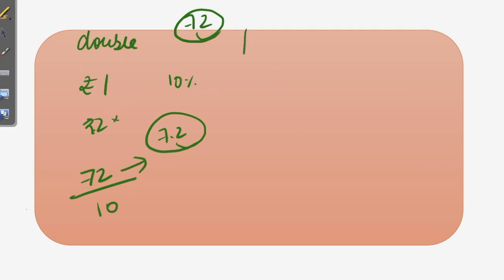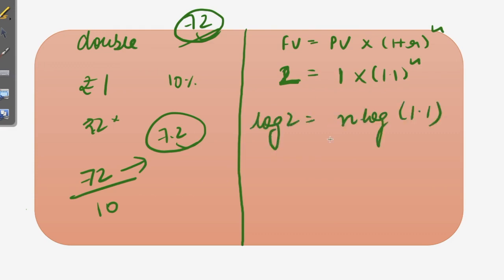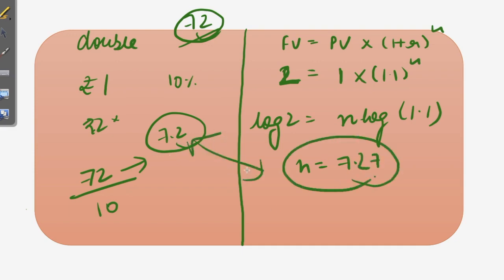To prove that Rule of 72 gives a genuine estimate, we use the formula: Future Value = Present Value × (1 + r)^n. With future value = 2, present value = 1, and r = 10%, so 2 = (1.1)^n. Solving using a log table gives n = 7.27, which is approximately the 7.2 from Rule of 72. So the Rule of 72 is used for the compounding effect to estimate how many years it takes to double the initial investment.